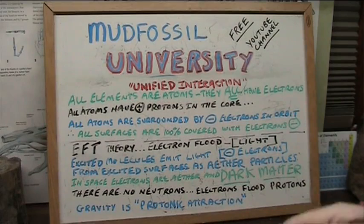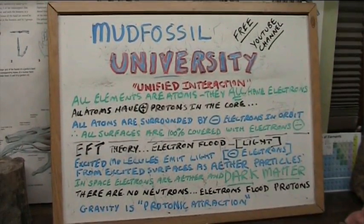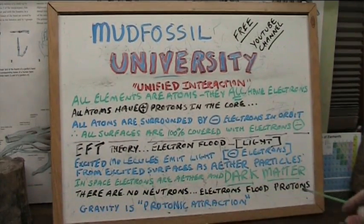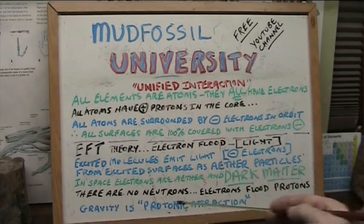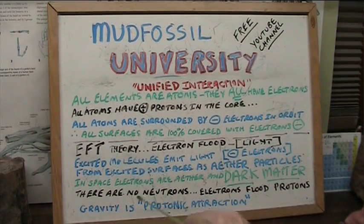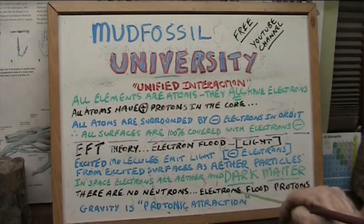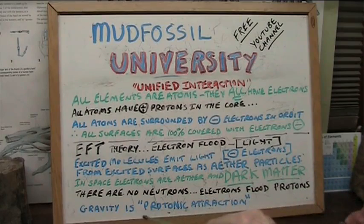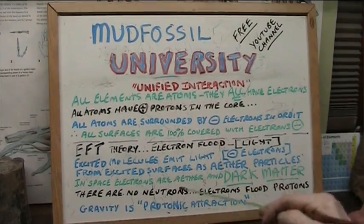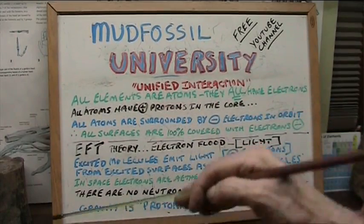There's nothing for them to collide with — there are no nuclear masses that are coated by electrons out there. All there is is particles being spit out from excited surfaces like from the sun and different galaxies. So 99% of that stuff out there is dark matter. That's where the dark matter is — those electrons on their way to becoming light and heat. There are no neutrons either. There are no neutrons in the nucleus. Neutrons don't exist. Never saw a neutron that isn't attached to a proton. What it is, is an electronic flood onto the protons, and gravity is protonic interaction.